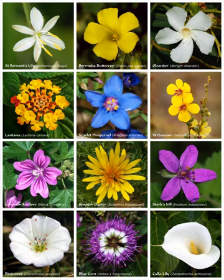Collectively the calyx and corolla form the perianth. Calyx: the outermost whorl consisting of units called sepals. These are typically green and enclose the rest of the flower in the bud stage; however, they can be absent or prominent and petal-like in some species.